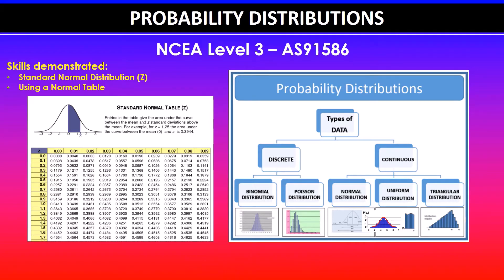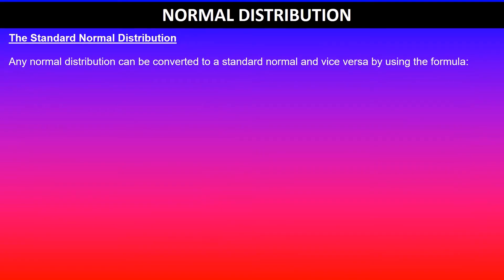If you haven't already please do check that video out. You just need to know that any normal distribution can be converted to a standard normal distribution and vice versa by using the z-score formula which is given by z equals x minus mu over sigma.